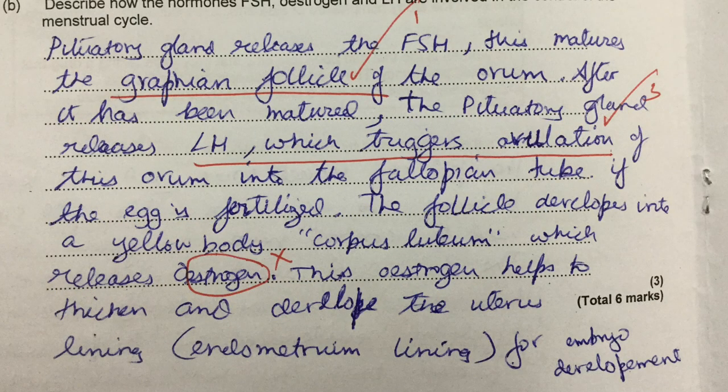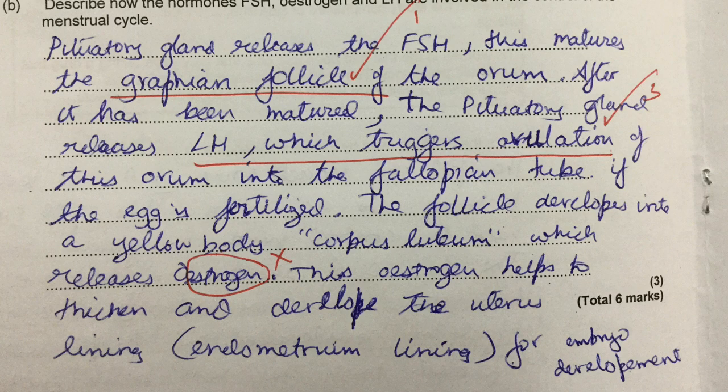Look at all this that this student has written. The first thing to notice is that no examiner or teacher wants to mark this amount of written material. The student says the pituitary gland releases FSH which matures the Graafian follicle of the ovum — this is true but beyond the specification. Sometimes you have to be careful because you can easily lose marks by going too far ahead. They also say the pituitary gland releases luteinizing hormone which triggers ovulation.